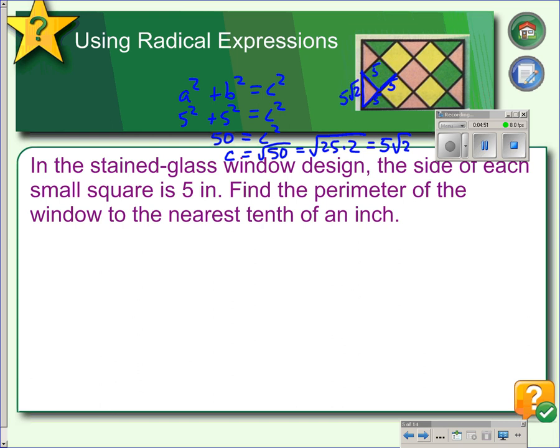And all the diagonals around this window will be the same length. So, we're going to take 5 root 2 and adding all the way around would be the same thing as multiplying. So, we have 10 segments that are the same length. So, 10 times 5 root 2 would be 50 root 2. Of course, our instructions say to give the answer to the nearest tenth. That means we're going to have to calculate it. And that comes out to 70.2 inches rounding to the nearest tenth.